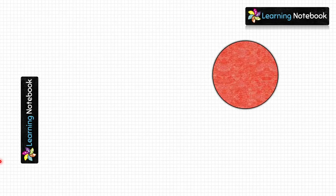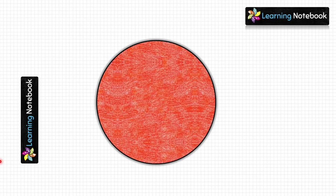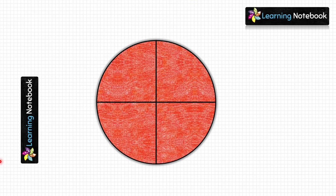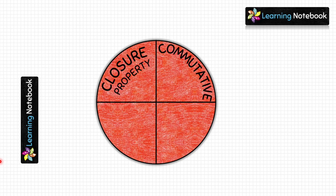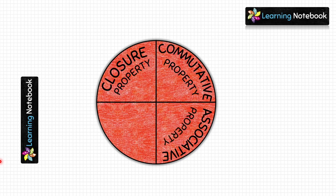Now take the red circle, fold it vertically as well as horizontally, and then write the names of all four properties: closure property, commutative property, associative property, and distributive property.